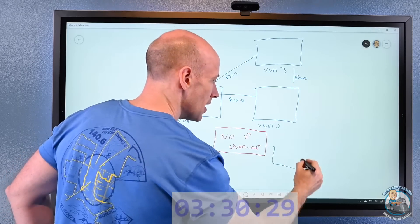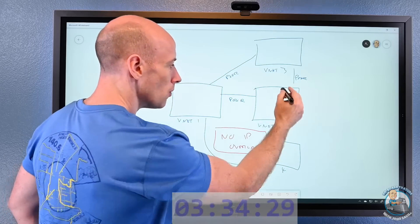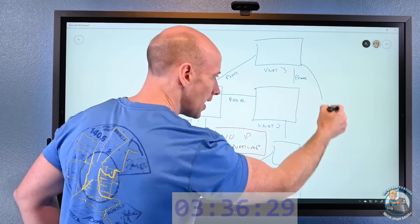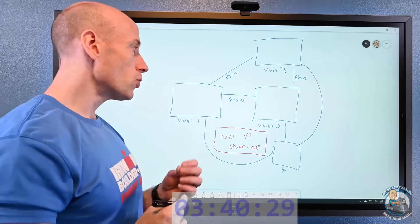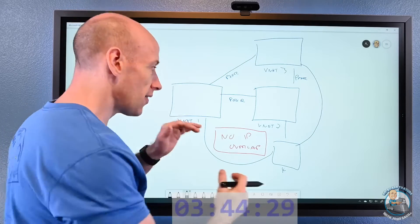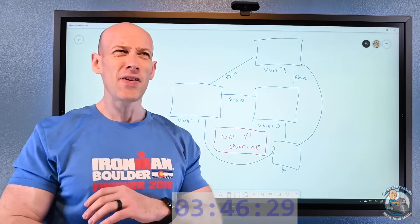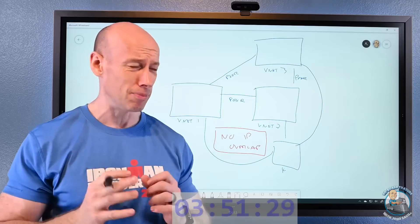So if I had lots of vnets, imagine I had vnet 4 as well. I'd have to peer that one and peer that one—I'd get like a full mesh scenario. So it's important to realize they are not transitive in nature. I have to create those peers. I think it's about 500 peers I can have on a virtual network, so I can have a lot of them. But if I did have this hub and then lots of spoke topology, it's going to be very hard to manage pretty quickly.